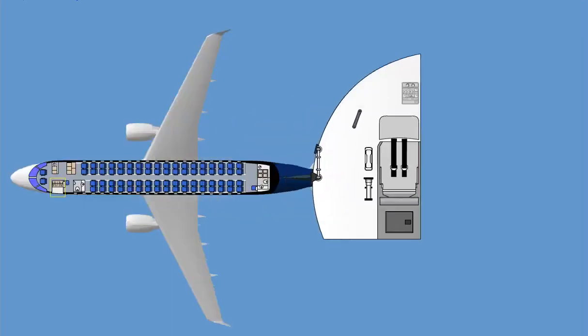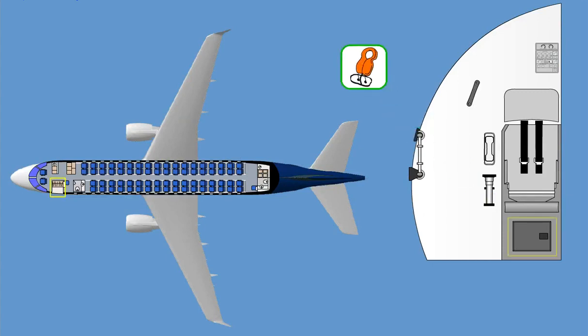The forward cabin crew area has a crew life jacket underneath the seat and an emergency flashlight mounted on the wall.